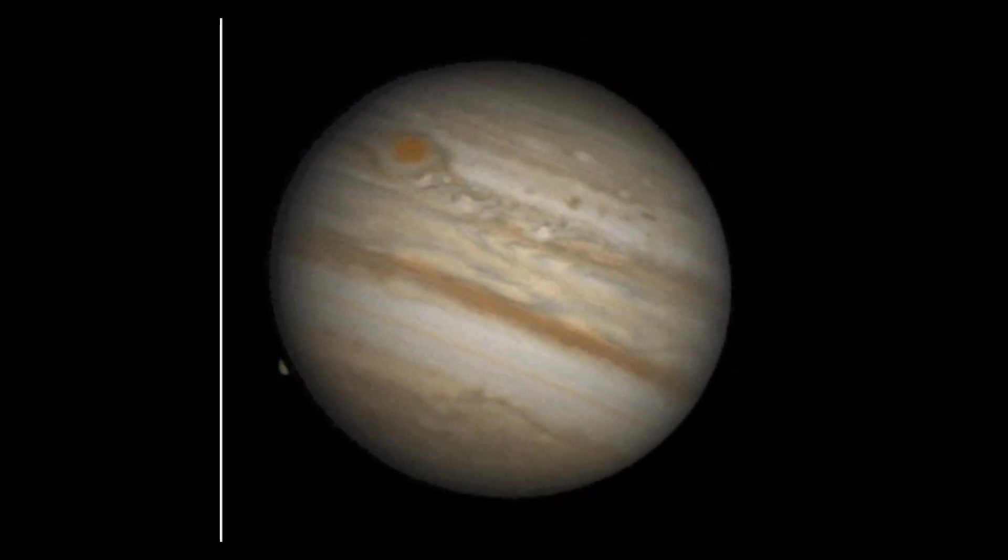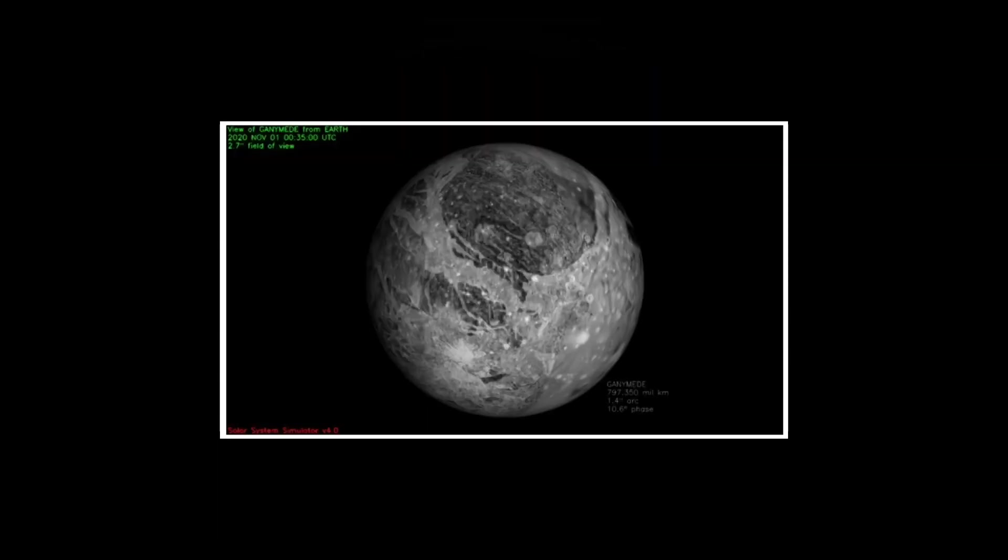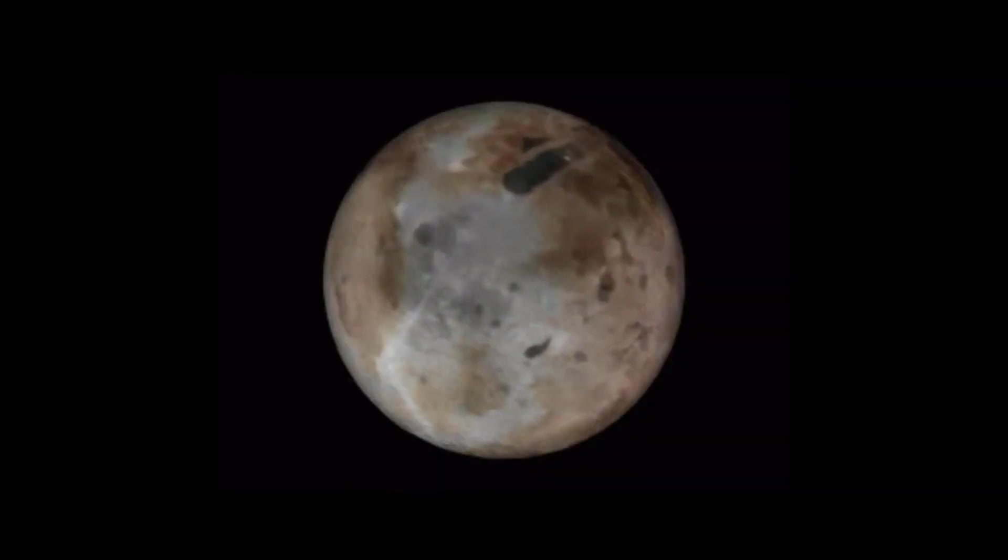Orbiting Jupiter, the biggest moon in our solar system is Ganymede. Its radius is 1,635 miles, along with being larger than Pluto and Mercury.